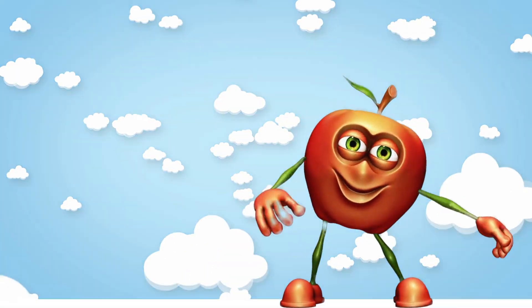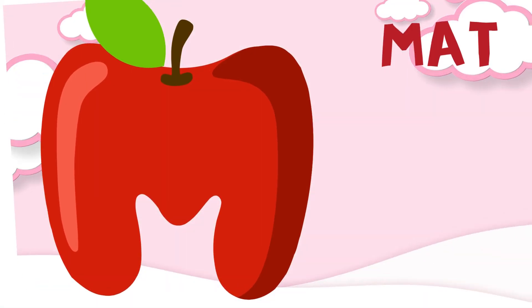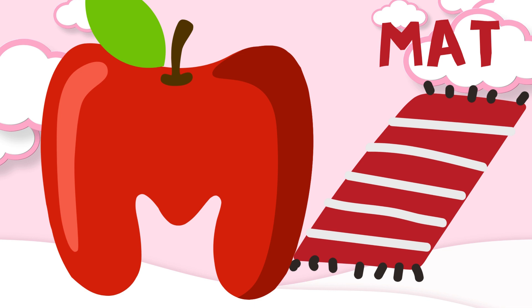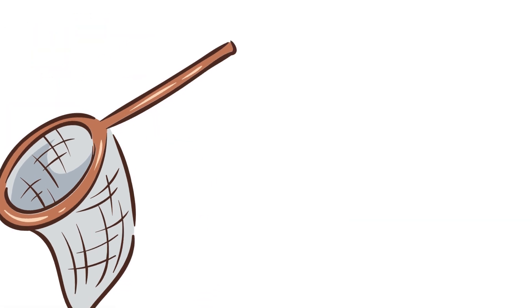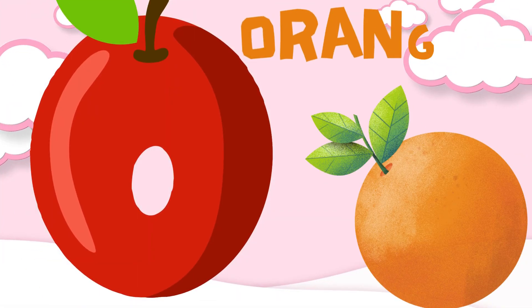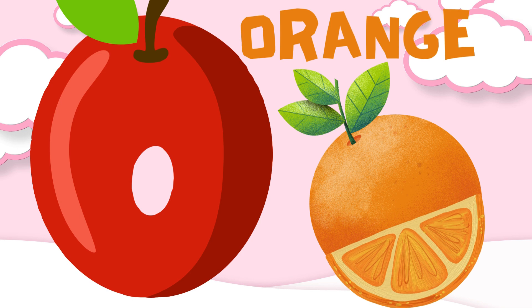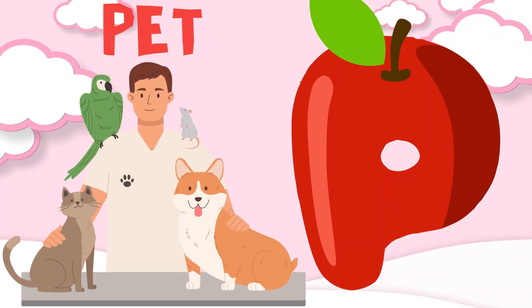M is for mat, m-m-mat. N is for net, n-n-net. O is for orange, o-o-orange.